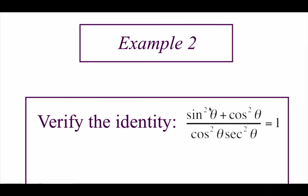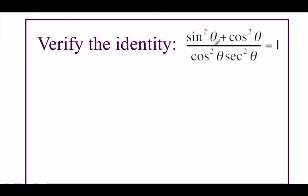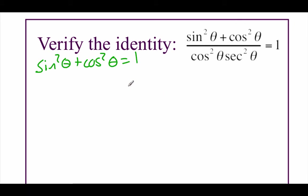Example number two: we've got sine squared of theta plus cosine squared of theta, all over cosine squared of theta times secant squared of theta, and we're going to show that equals one. We're going to start on the more complicated left-hand side. On top, I see sine squared plus cosine squared — we should automatically recognize that as our Pythagorean identity: sine squared plus cosine squared equals one. So I'm going to replace the top with one, giving us one over cosine squared of theta times secant squared of theta equals one.